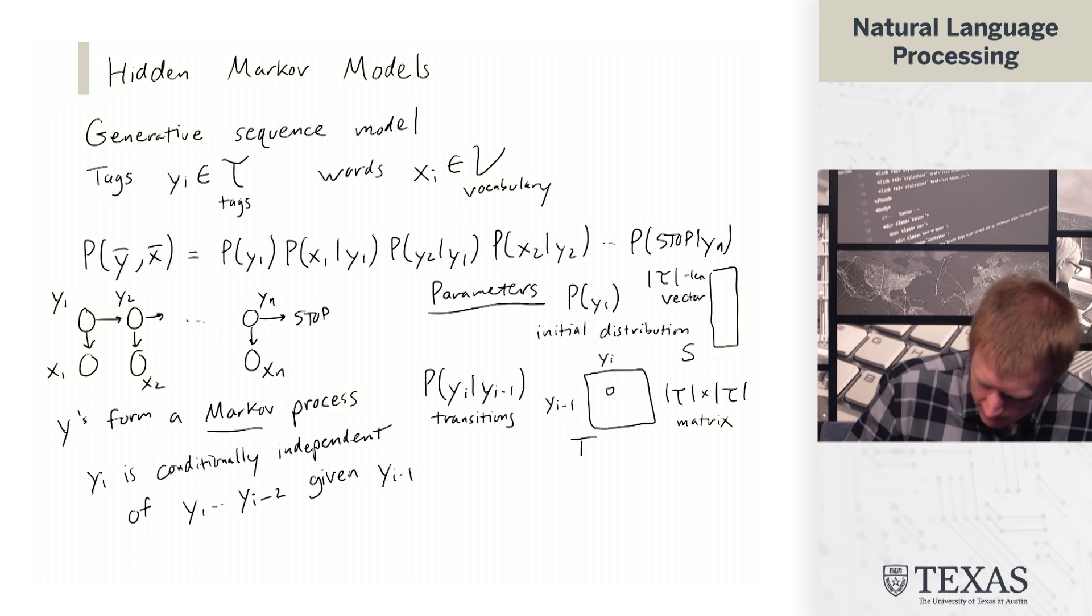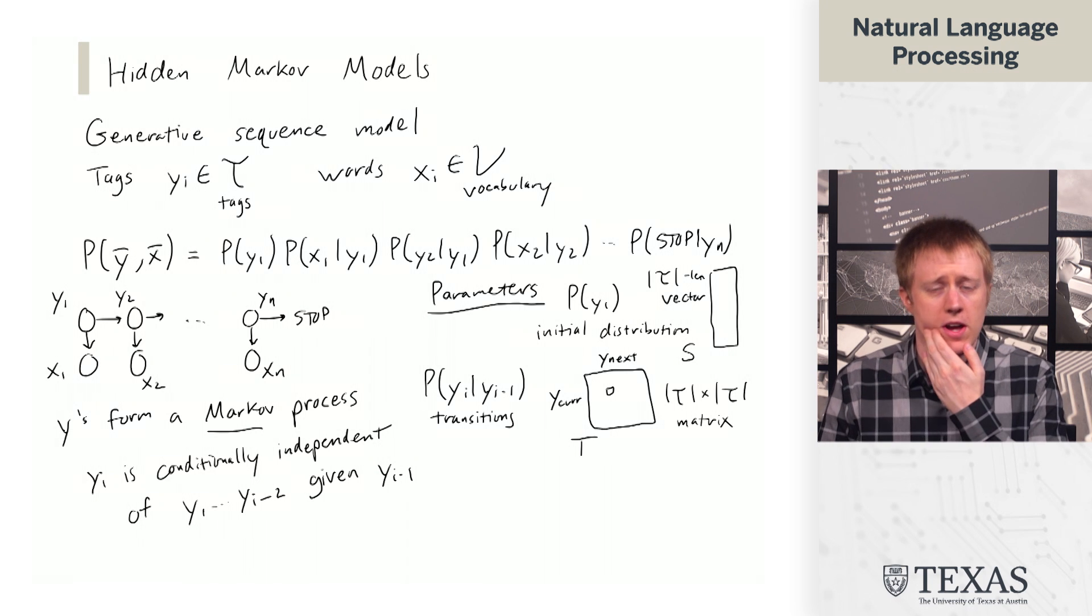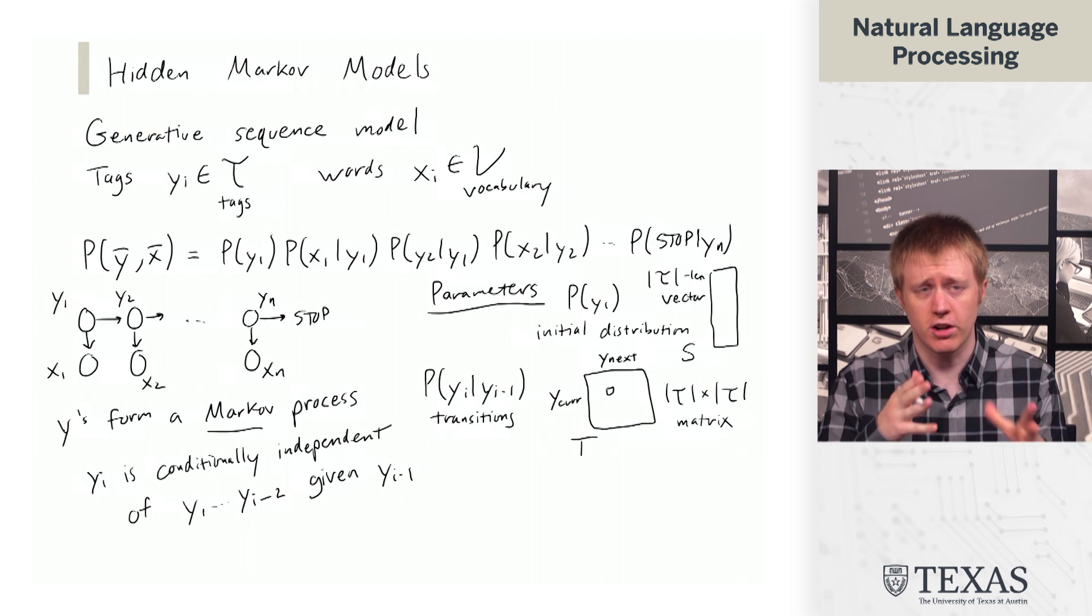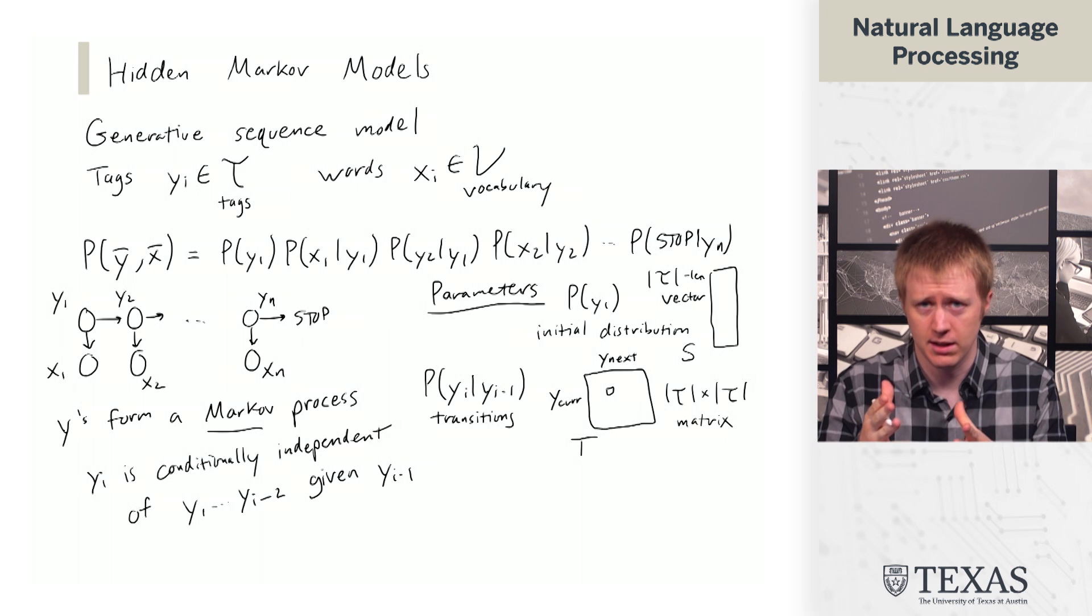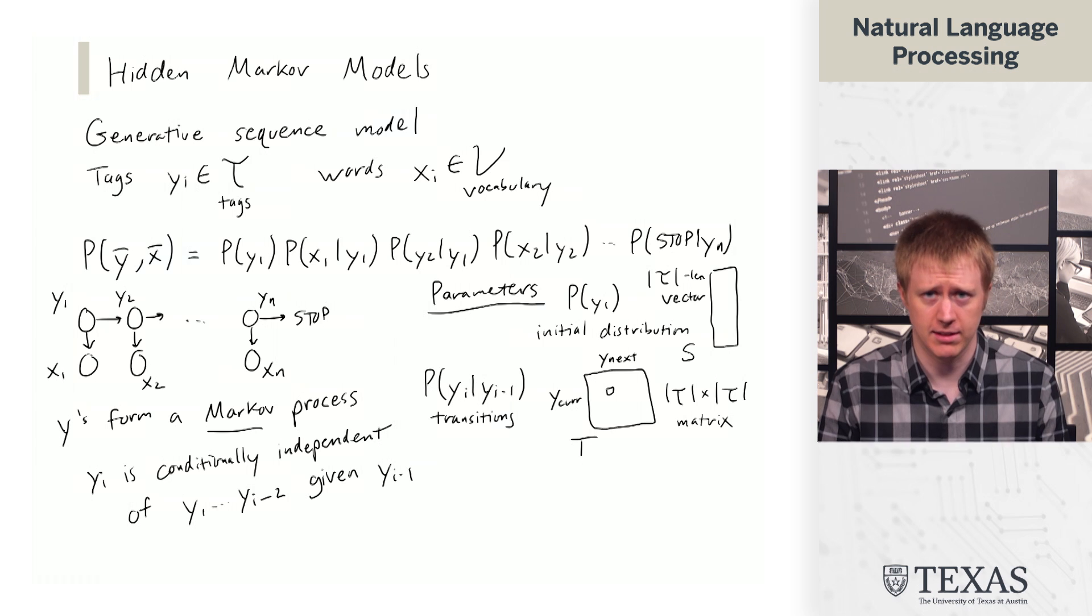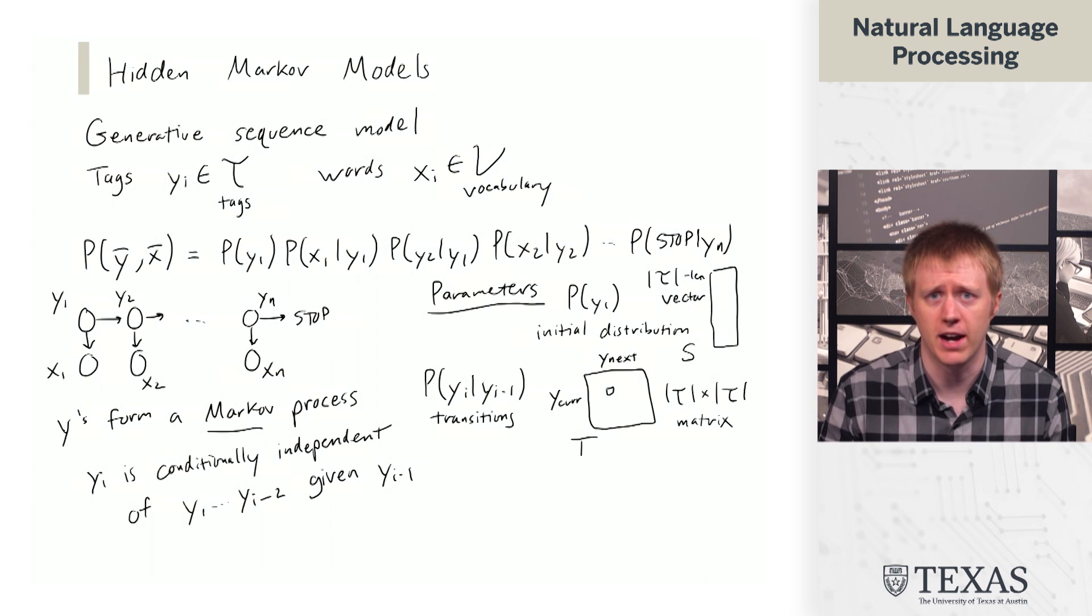Well, actually, let me change this a little bit. I'm going to write Ycur and Ynext. So it's going to tell us what is the probability of the Ynext tag given the Ycur tag. And so these transitions are independent of the positions in the sentence. So there's no dependence on I or anything there. It is just a matrix of these probabilities defined over every pair of tags.